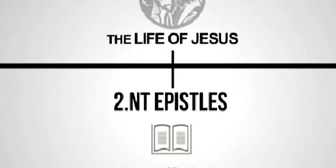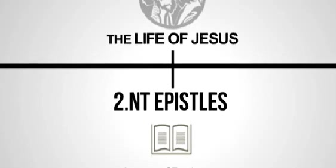The next type of historical source for the life of Jesus are the New Testament Epistles. These are basically the letters of Paul, James, John, and Peter — the Epistles outside of the Gospels. These are different sources from the Gospels.